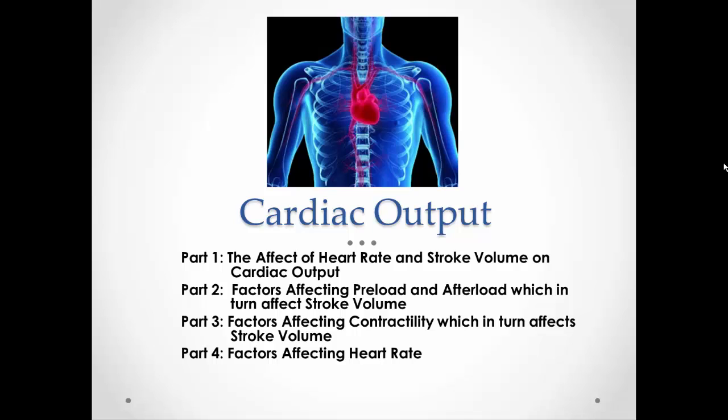Part one is going to look at how cardiac output is affected by heart rate and stroke volume. Stroke volume is how much blood is pumped out with each beat of the heart, and heart rate is how many beats per minute. Then the next video will look at factors that affect preload and afterload, which in turn affect stroke volume and therefore cardiac output. The third video will cover factors affecting contractility, which also affects stroke volume and cardiac output. And the last video will look at factors affecting heart rate.